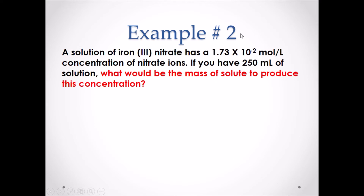Example number two. A solution of iron-3 nitrate has a 1.73 × 10⁻² moles per liter concentration of nitrate ions. If you have 250 milliliters of solution, what would be the mass of solute needed to produce this concentration? Pause the video and attempt this example.